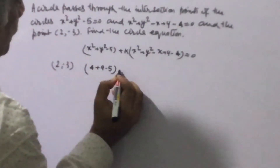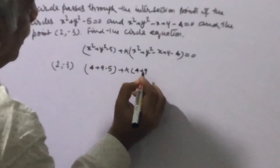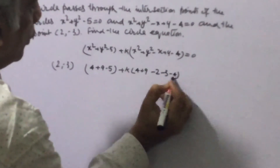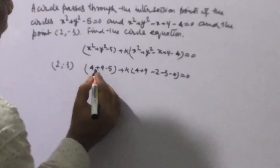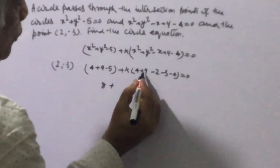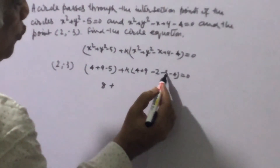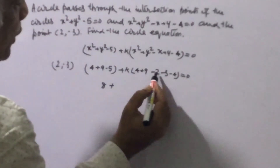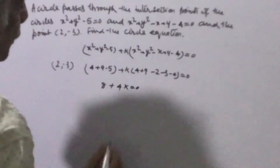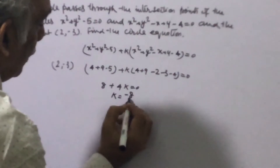Simplifying: 4 + 9 - 5 = 8, and inside the k bracket: 4 + 9 - 2 - 3 - 4 = 4. So we have 8 + 4k = 0, which gives k = -8/4 = -2.